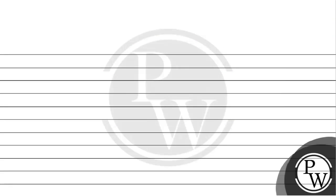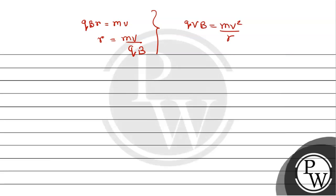We know that if a charged particle is in a magnetic field of strength B and it is moving, it comes onto a circular path. So Q·V·B equals MV²/r, which gives us QBR equals MV, and therefore R equals MV upon QB. From qvB = mv²/r, v cancels and we get R = mv/qB. This is the basic fundamental idea for a charged particle moving with velocity v.